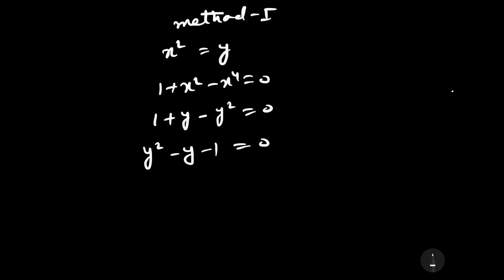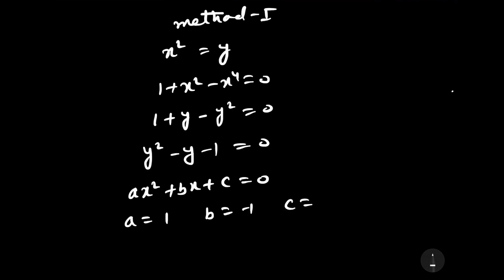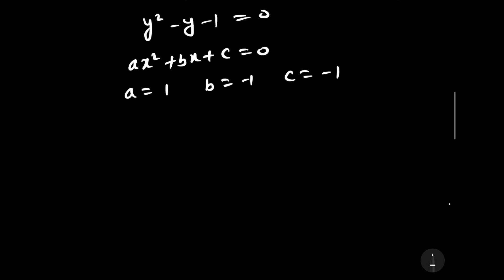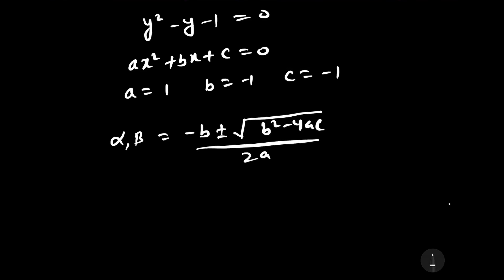Comparing with the standard quadratic equation ax squared plus bx plus c equals 0, we get a equals 1, b equals minus 1, and c equals minus 1. Using the Sridharacharya rule, the roots are given by: minus b plus or minus square root of (b squared minus 4ac), all divided by 2a.